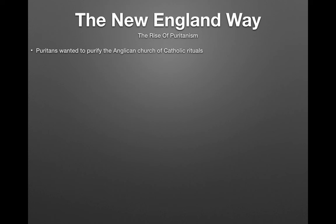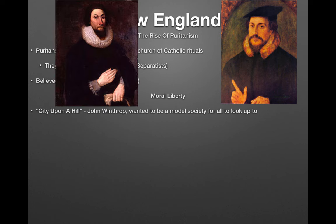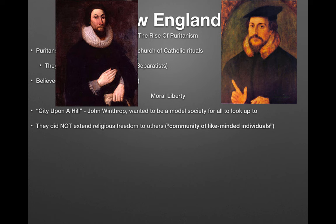Puritans wanted to purify the Anglican Church of Catholic rituals — not break away from it, as separatists did. They believed in predestination, the idea from John Calvin that before you are born, God already determined whether you would go to heaven or hell. John Winthrop was a key Puritan figure who gave the famous 'city upon a hill' speech, saying New England should be a model society for the rest of the world. Despite being denied religious freedom in England, Puritans did not extend religious freedom to others.